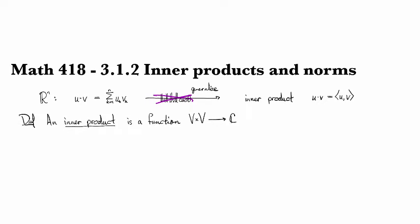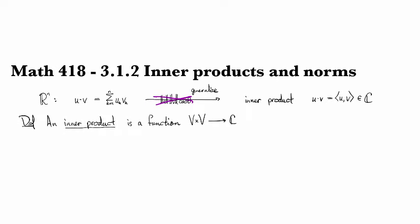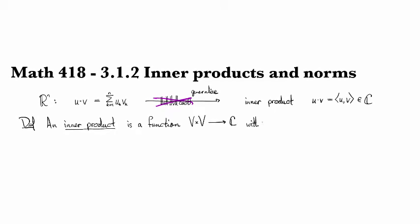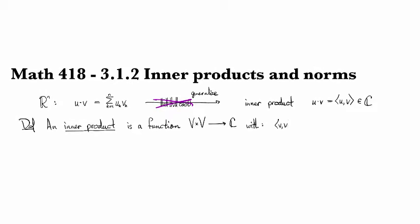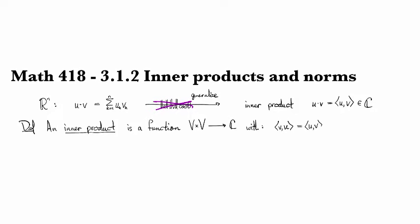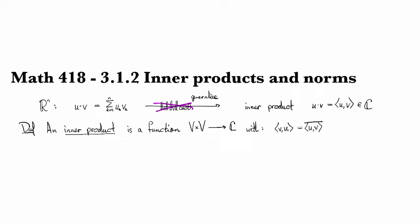And we usually denote it with the inner product here. So the idea is that this is going to be some kind of number, a scalar. And it has to satisfy the following properties. It needs to be the case that if you switch the order of these things, then you get the same thing. Or if it's complex valued, you get the conjugate of the thing you started with.